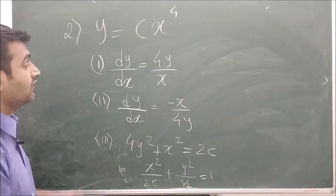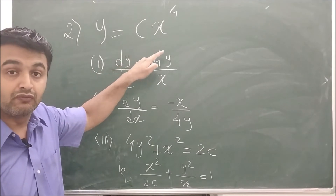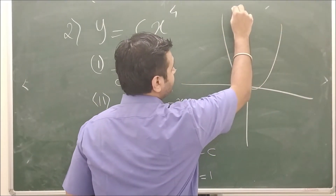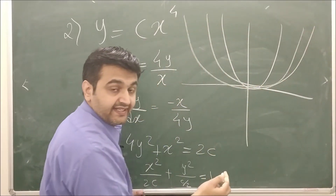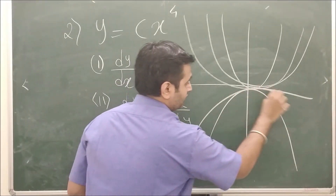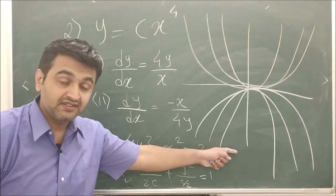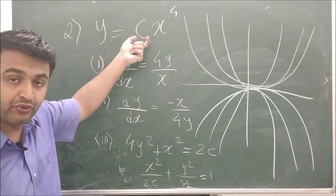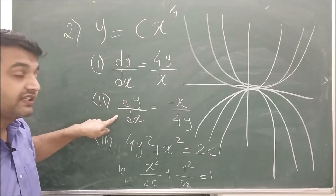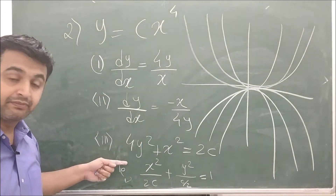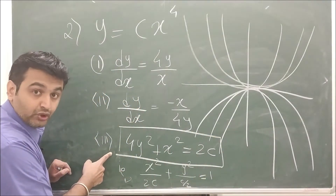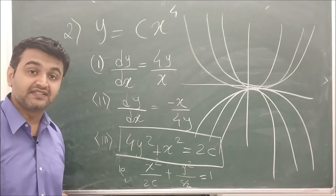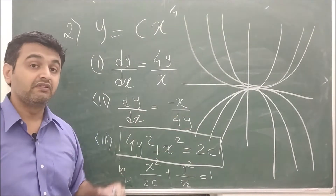Let's take a second example: the family of curves y = cx⁴, which are parabolas. When c is positive you get upward parabolas; when c is negative you get downward parabolas. First, find the corresponding differential equation by differentiating, finding the value of c, and resubstituting into the original equation to eliminate c. Then take the negative of the reciprocal to get the differential equation for the orthogonal trajectories, and apply variable separable. The solution you obtain is the family of ellipses: x²/(2c) + y²/(c/2) = 1.